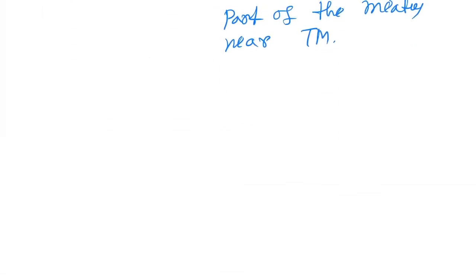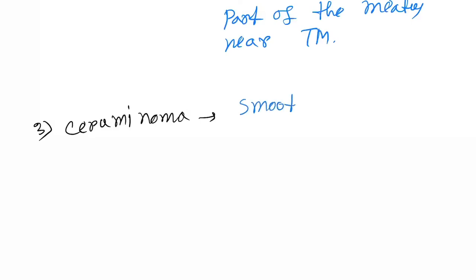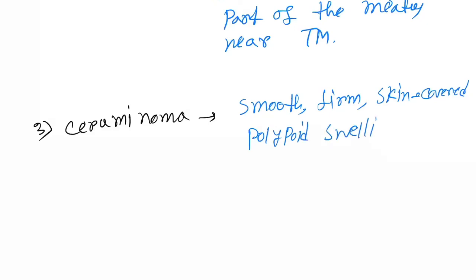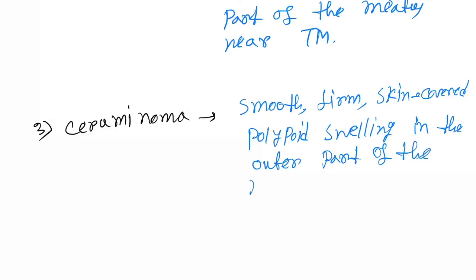The third benign tumor of the EAC is ceruminoma. These are smooth, firm, skin-covered, polypoid swellings in the outer part of the meatus.